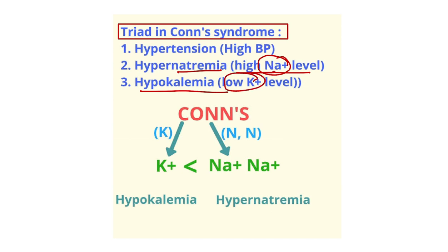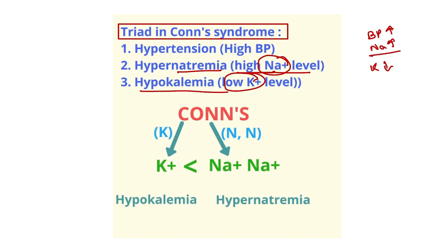Conn's syndrome causes hypertension, hypernatremia, and hypokalemia in the blood — that means high sodium, low potassium, and increased blood pressure. High blood pressure is directly related to sodium: more sodium means more BP, less sodium means less BP. In Conn's syndrome, aldosterone reabsorbs more sodium and water, so BP increases.